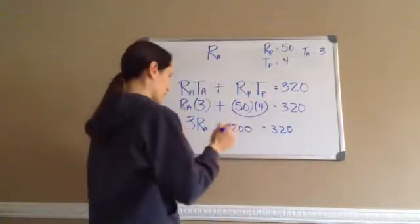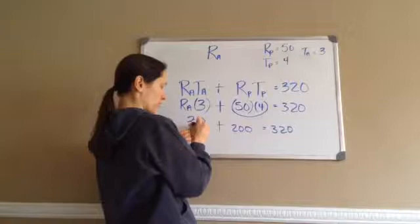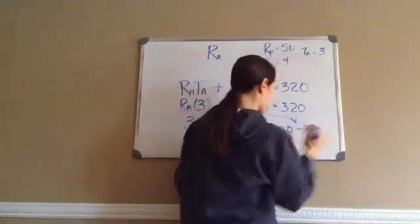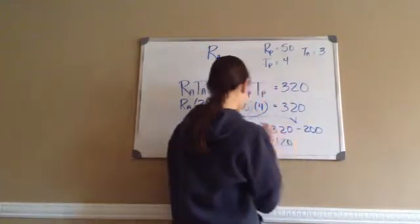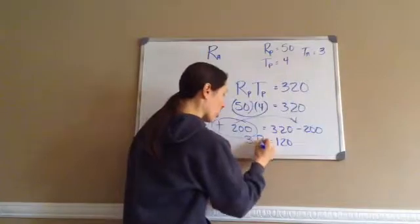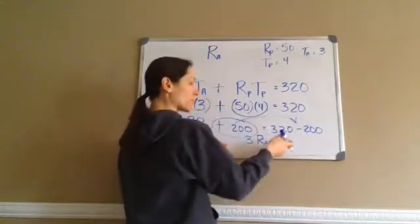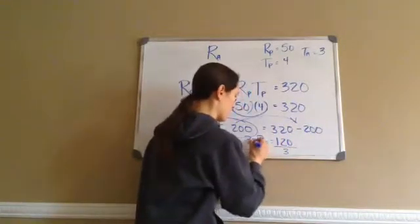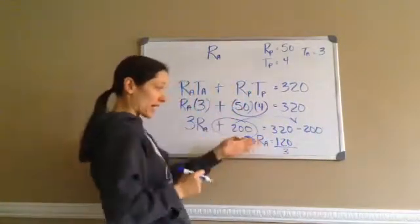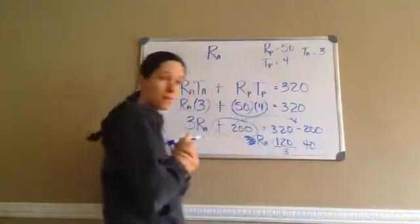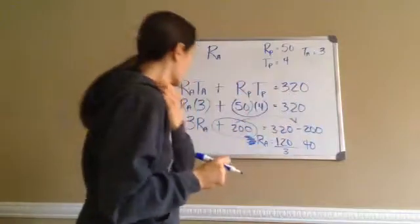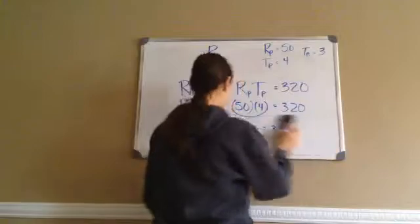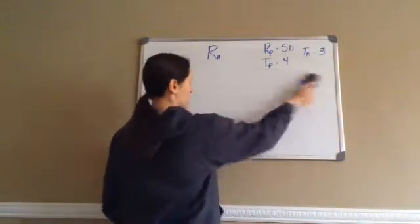Now remember, we're trying to get RA by itself, but right now it's with the 3. So we're going to take this plus 200, move it across the equals, and it becomes minus 200. That gives us 120. And now we have 3 times RA equals 120. Since this is times 3, when I move it across the equal it becomes divided by 3. So RA equals 40 is my answer. We solved for RA, which is what we wanted to do. Each of these ones is going to get harder and harder each time, so pay attention.